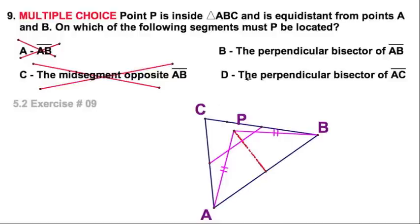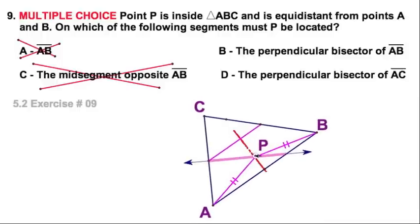And going around, let's look at D. Boy, I've got two others to consider. The perpendicular bisector of AC. Well, this is the perpendicular bisector of AC. It goes through the midpoint and it's perpendicular. Well, again, point P could be on this line right there. But again, it doesn't have to be. So I'm going to have to cross this one off.